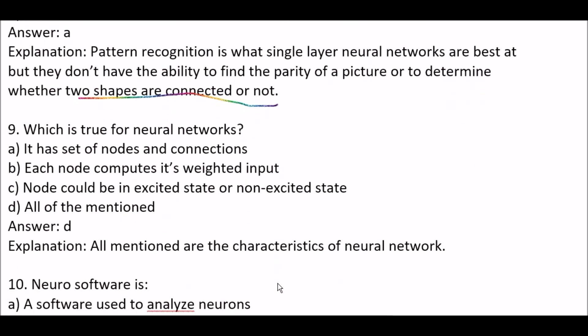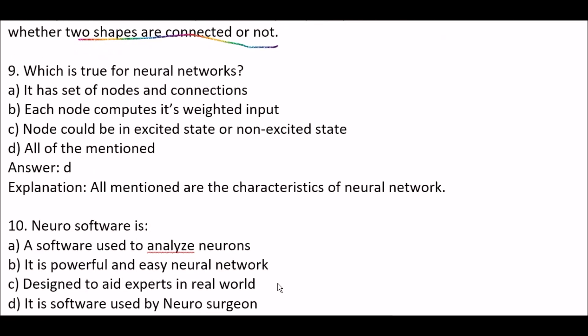Next question: which is true for neural networks? Option A: it has a set of nodes and connections. Option B: each node computes its weighted input. Option C: a node could be in an excited state or non-excited state. Option D: all of the mentioned. The right answer is option D — all of the mentioned, because all of these are characteristics of a neural network.